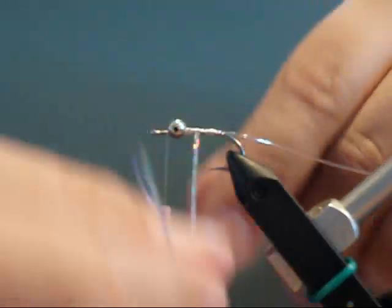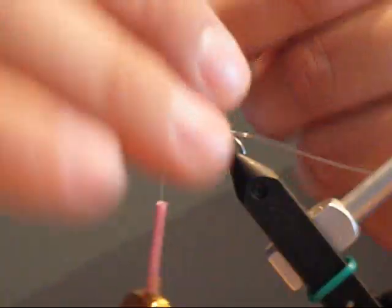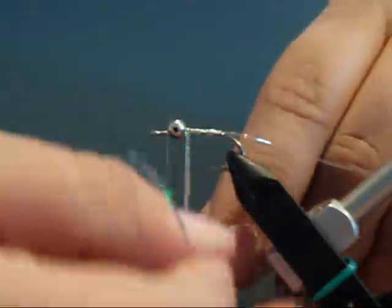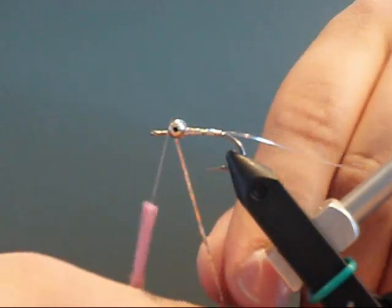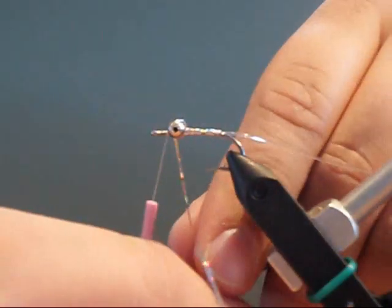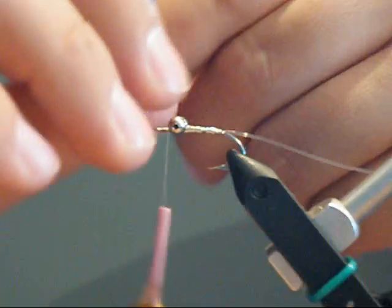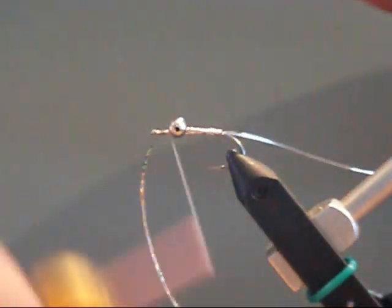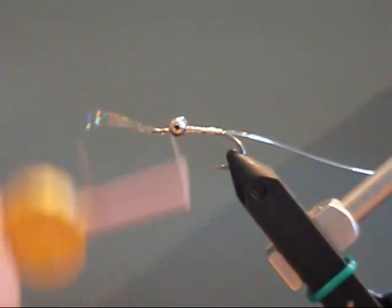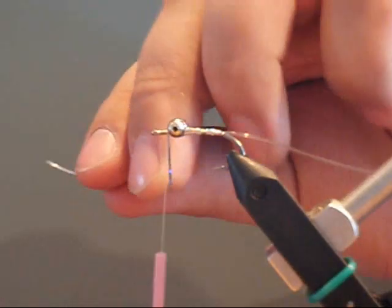Also make sure they are in nice close turns as well. Once you get to the eyes, wrap it all the way to the back of the eyes until you can't anymore. Then make two wraps in either direction of the eyes so that you have a holographic tinsel look in between the eyes as well. Then tie off your tinsel.